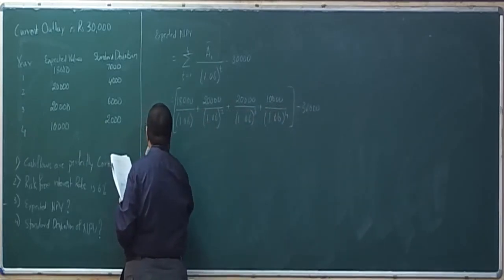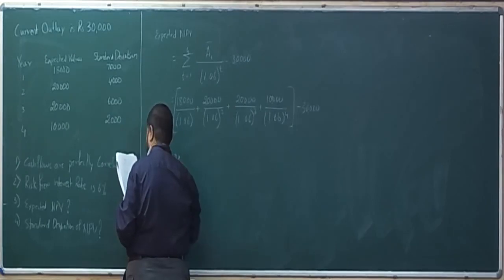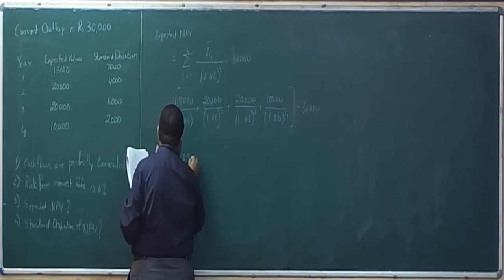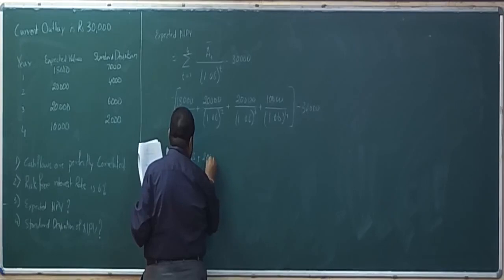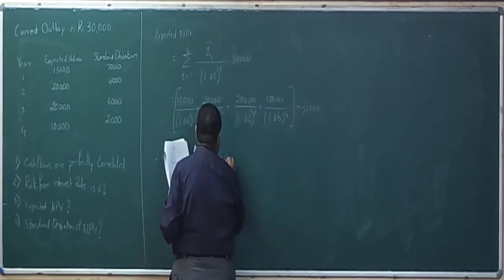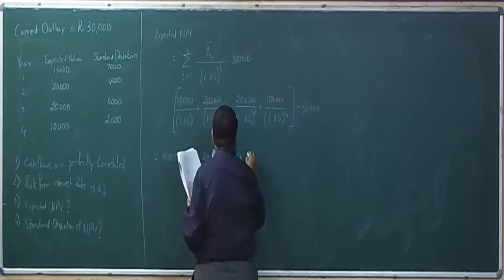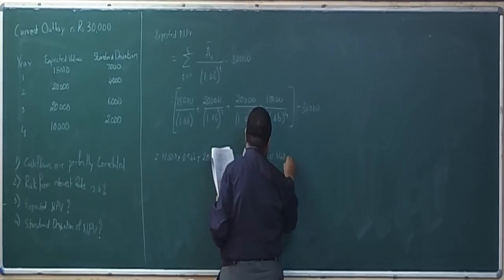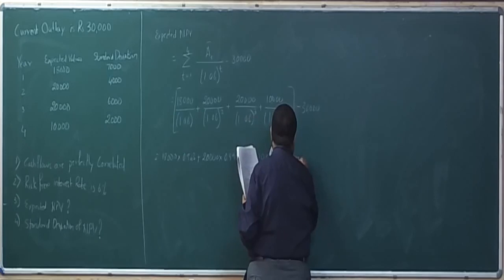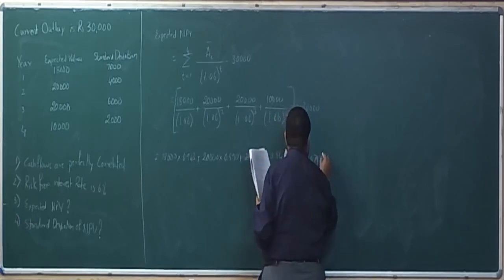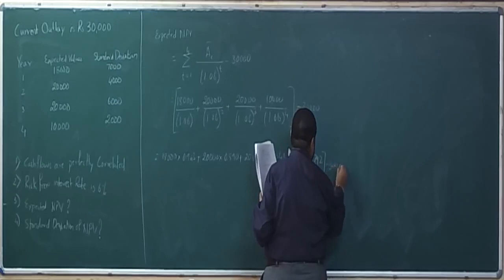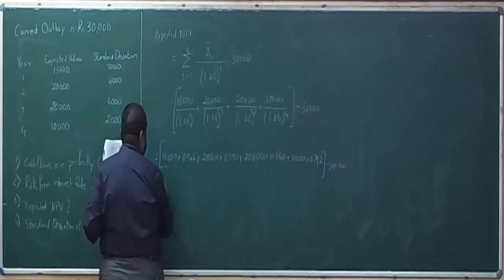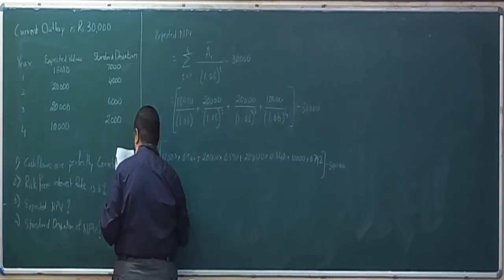This is equal to 18,000 into 0.943 plus 20,000 into 0.890 plus 20,000 into 0.840 plus 10,000 into 0.792 minus 30,000. This gives you 29,494 as the answer.